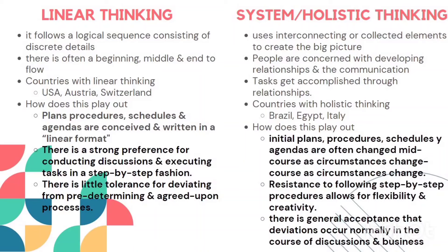In systematic or holistic thinking, the big picture is created by collecting and interconnecting elements with each other. People are concerned with developing relationships and communication, and tasks get accomplished through relationships — if you know someone, your task will be completed faster. Countries which follow holistic thinking include Brazil, Egypt, and Italy.